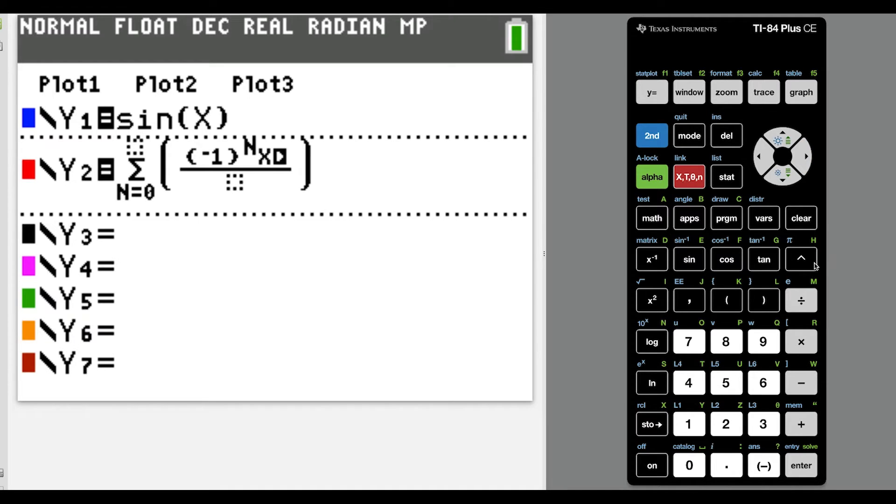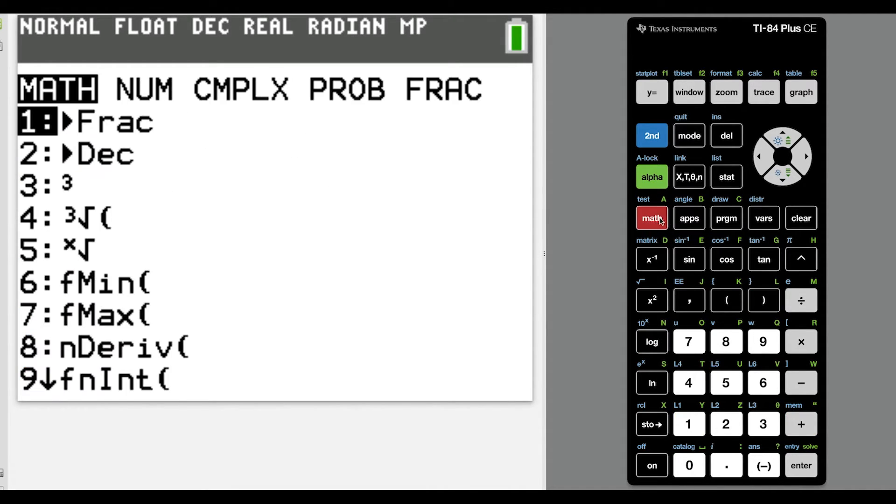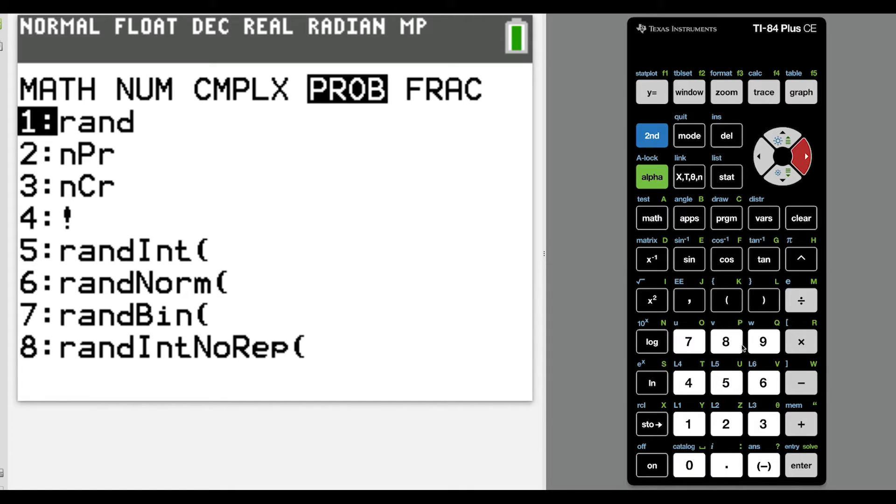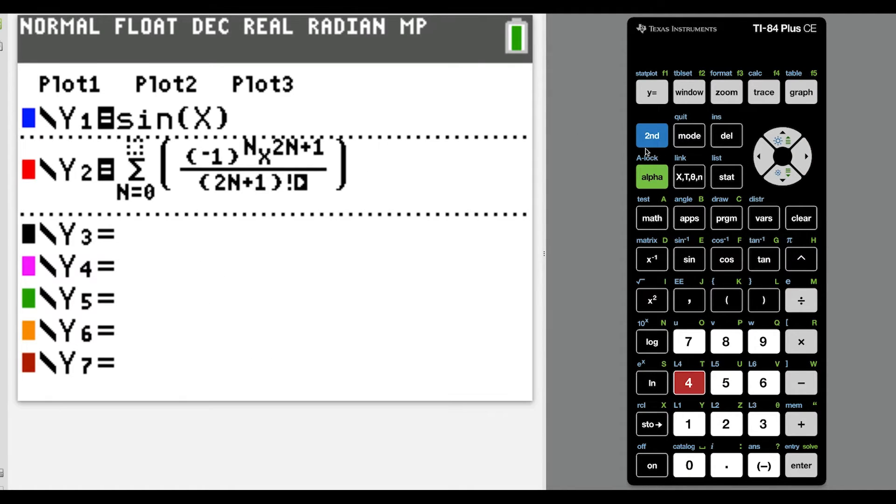So right after the exponent n, we have x to the 2n plus 1. And then we're dividing by 2n plus 1 factorial, which we have to write 2n plus 1 in parentheses. That's just a little bit of a notation trap if you don't. So now we hit math, we go to the right to probability, and we throw in our factorial.